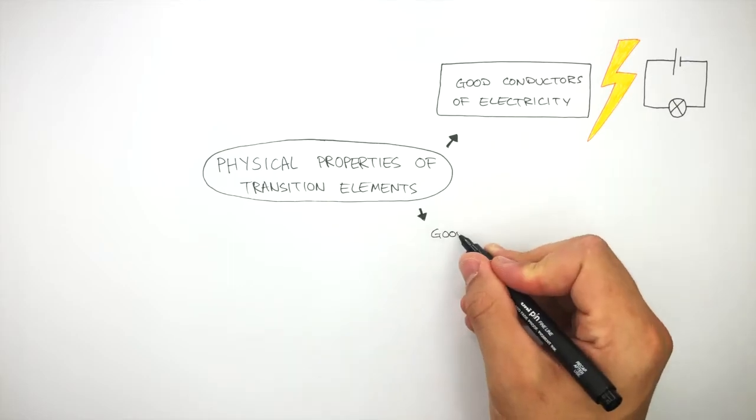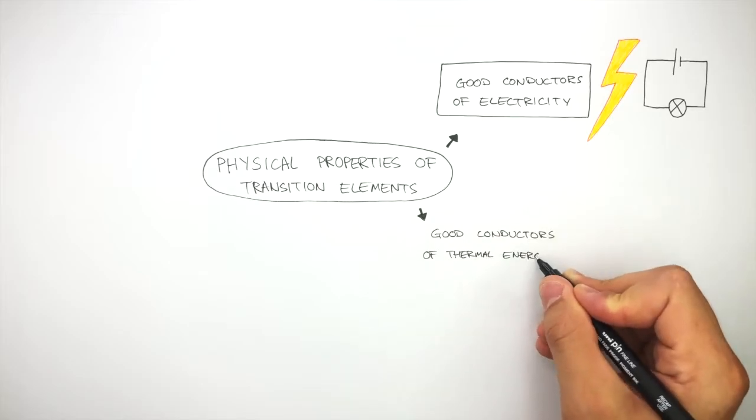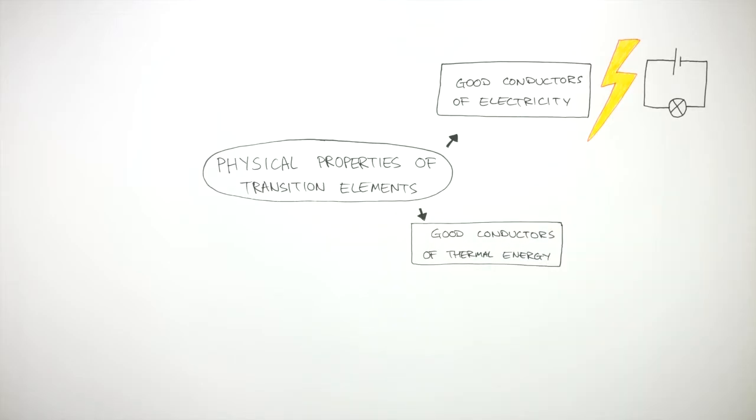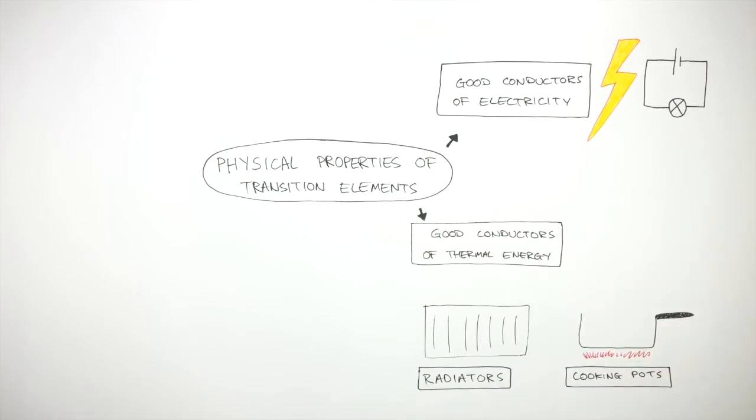Transition elements are good conductors of thermal energy. Therefore these transition metals are used in radiators and also in cooking pots because they're good conductors of thermal energy.